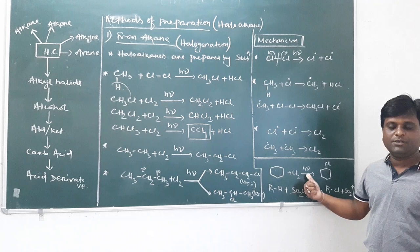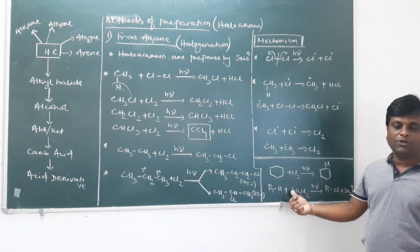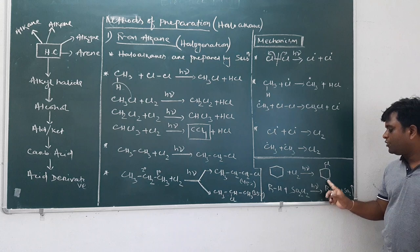In case of cycloalkanes, cyclohexane treated with chlorine in presence of light gives chlorocyclohexane. This reaction can also be carried out by adding SO2Cl2, called sulfuryl chloride. Alkane treated with sulfuryl chloride in presence of light gives RCl plus SO2 and HCl.